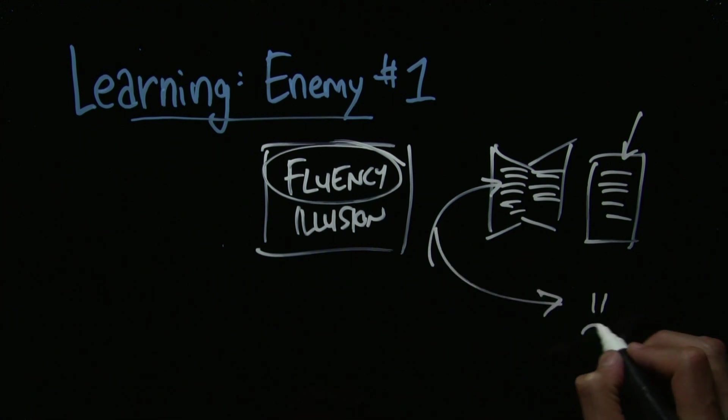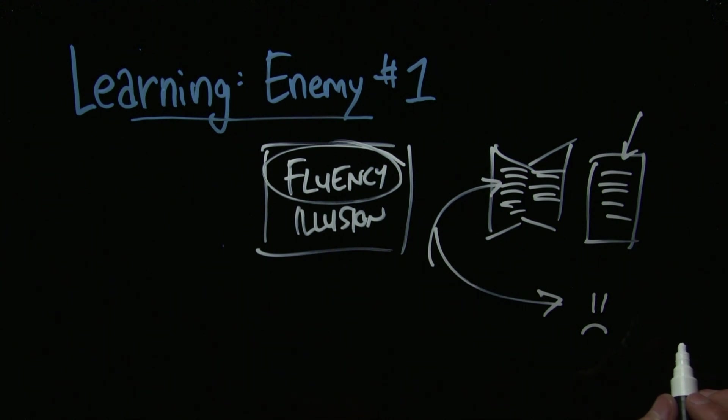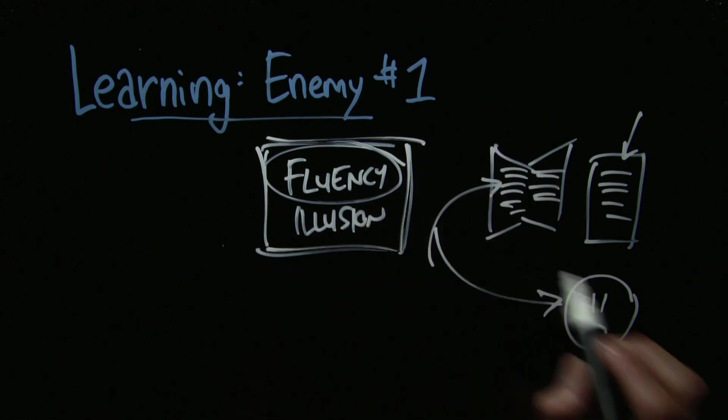Then the test comes and you didn't get it as well as you wanted to. Benedict says this is the number one reason why people struggle on tests. It's not anxiety, it's not whatever else you attribute it to. It's this, the fluency illusion.